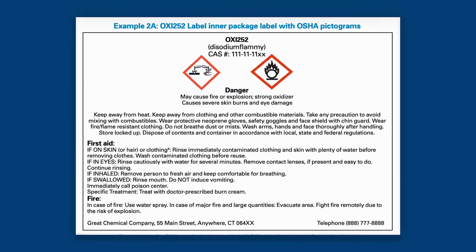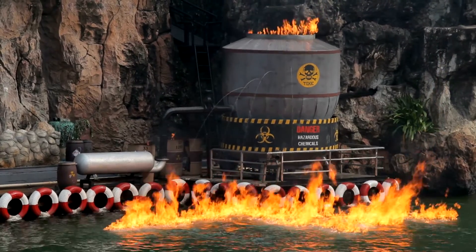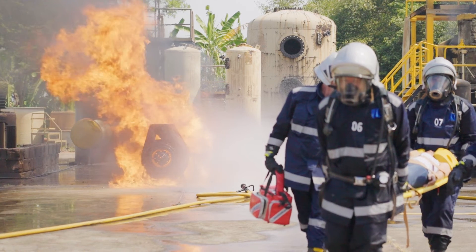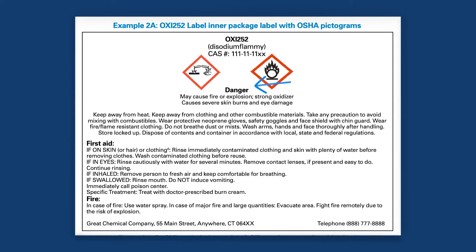Our second example is a more complex and hazardous chemical, Oxy-252, as indicated by its product identifier. Straight away, we see two pictograms — one for corrosion and another for oxidizing. These symbols immediately let us know that we're dealing with a chemical that can cause serious harm, including fires, explosions, and severe burns. The GHS signal word danger underscores the severity of these risks. This is followed by hazard statements: may cause fire or explosion, strong oxidizer, and causes severe skin burns and eye damage, which explicitly warn us of the dangers this chemical presents.